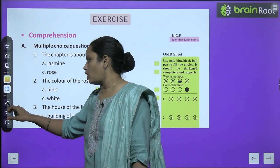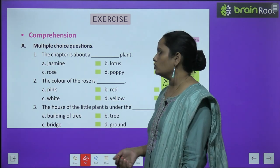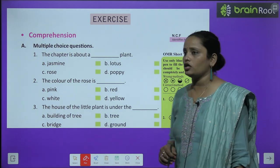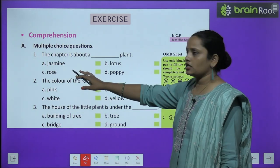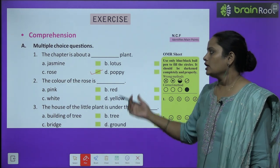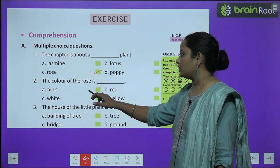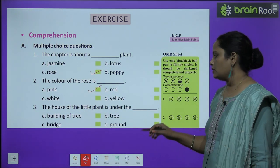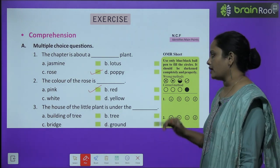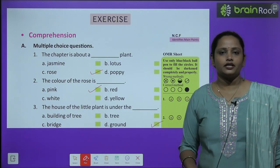Now let's move on to the book exercise. Comprehension is the first part — Exercise A: multiple choice questions. First question: this chapter is about a dash plant — is it jasmine, lotus, rose, or poppy? It is a rose plant. Next, the color of the rose — pink, red, white, or yellow? It is pink. Third, the house of the little plant is under the — building, tree, bridge, or ground? The correct answer is ground.